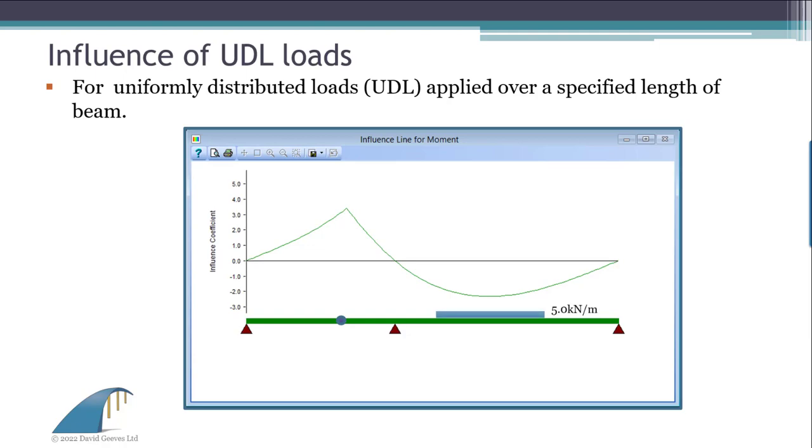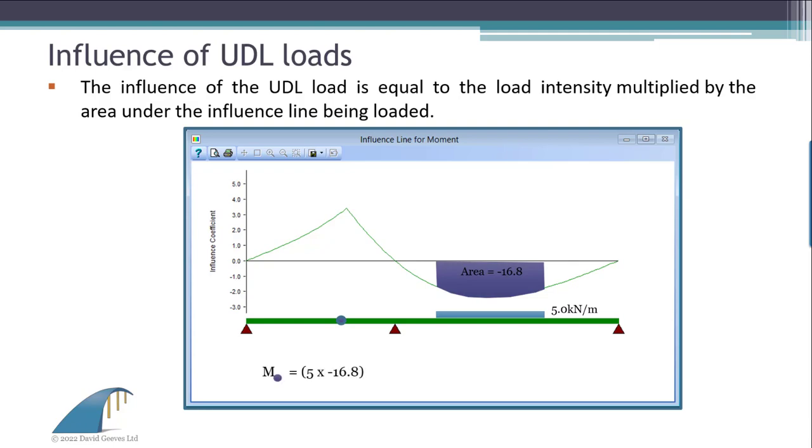Uniformly distributed loads can be dealt with in a similar manner, where we can vary the start and end location of the UDL. In this case, the design moment is calculated by multiplying the load intensity of the UDL by the area under the influence diagram over the length of the applied load.